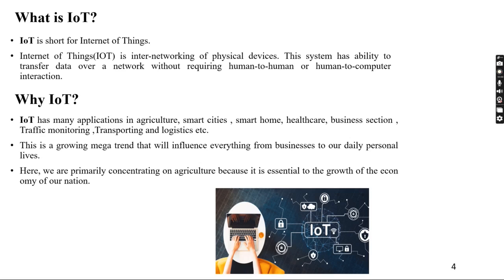What is IoT? IoT is short for Internet of Things. The Internet of Things is the inter-networking of physical devices. This system has the ability to transfer data over a network without requiring human-to-human or human-to-computer interaction. Why we use IoT: IoT has many applications in agriculture, smart cities, smart home, healthcare, business, traffic monitoring, transport, logistics, etc. This is a growing trend that will influence everything from businesses to our daily personal lives. We are primarily concentrating on agriculture because it is essential to the growth of the economy of our nation.